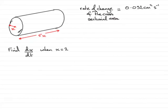In this question we're given this cylindrical metal rod which is being heated and at time t we're told that the radius is x and the length is 5x.